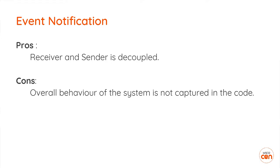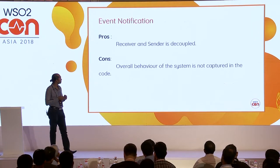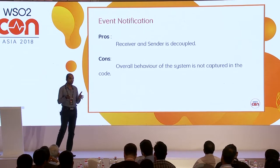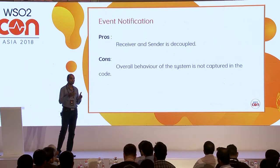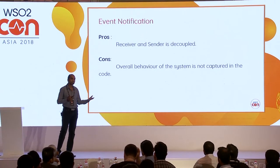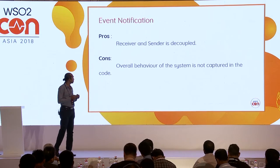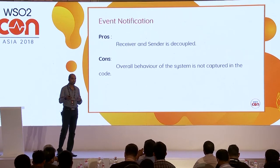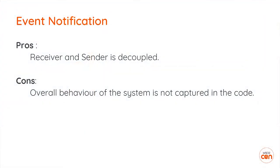The main pro of event-driven architecture is that the receiver and sender are decoupled, and you can extend the system quite easily. The downside is that once you have an event-driven system, it's hard to tell what a particular flow would do, unless you go in and actually monitor what's happening. In a traditional case, you'd have code representing the entire flow of a business process, but in this case you won't be able to see that. This makes it more difficult to debug and monitor the system, so you have to use different approaches.